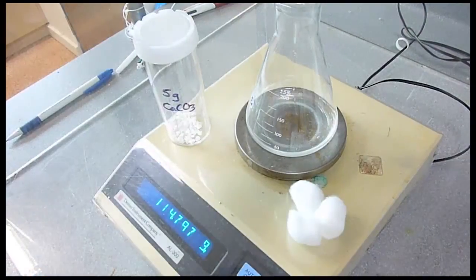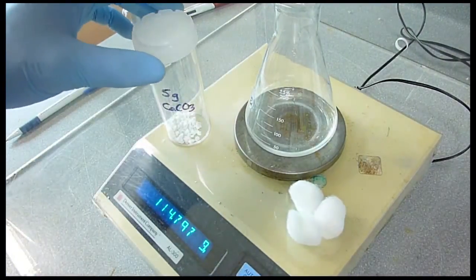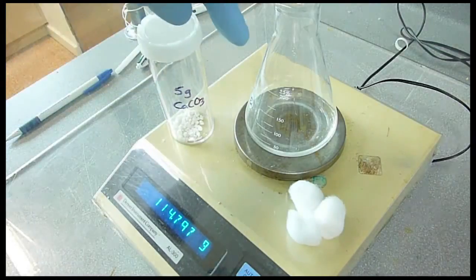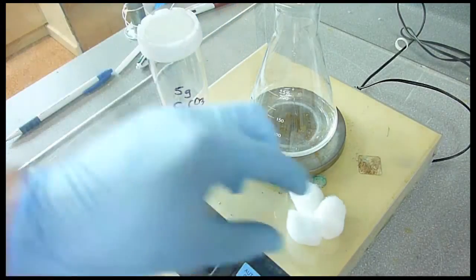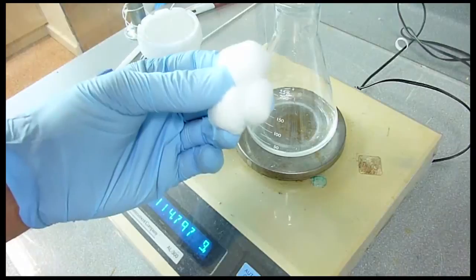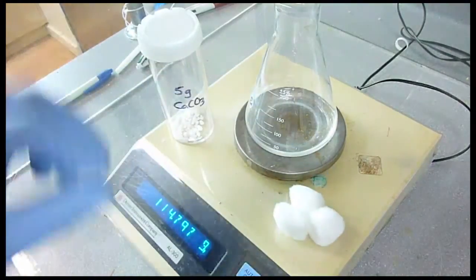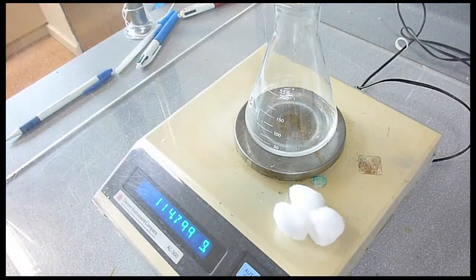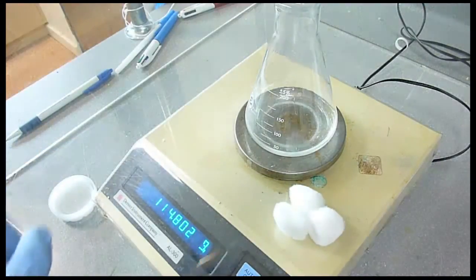Measuring the mass change rate of reaction. Five grams calcium carbonate, 20 mils hydrochloric acid, cotton wool balls to stop any splashing. You can see the mass down there. We're looking for the mass lost. Let's see what happens.